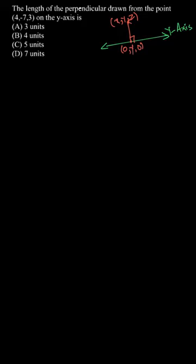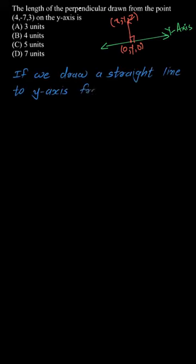So if we draw a straight line from this given point (4, -7, 3) to the y-axis, the foot of the perpendicular will be (0, -7, 0).